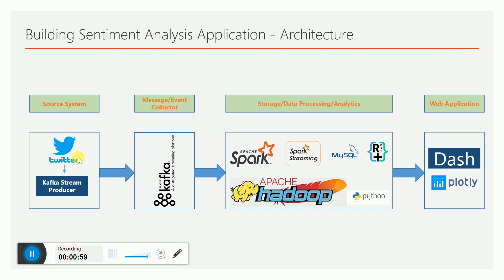We will have a Kafka stream producer which will get tweet messages from the Twitter stream and publish them to Kafka, which is a distributed streaming platform or PubSub messaging system. Then we will consume that message using Spark Structured Streaming, do the sentiment analysis, and write the data into a MySQL database. Then we will develop a web application to show the sentiment analysis results on a real-time dashboard which refreshes every 10 seconds.